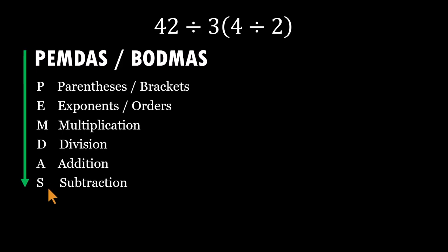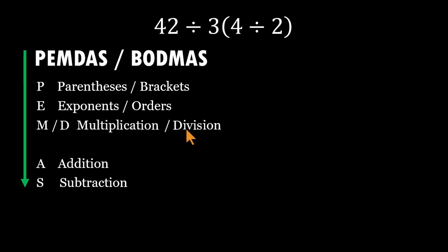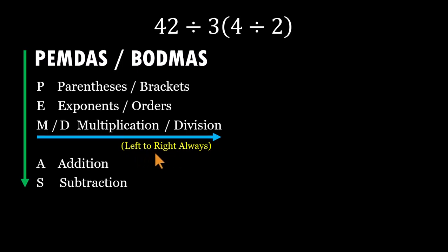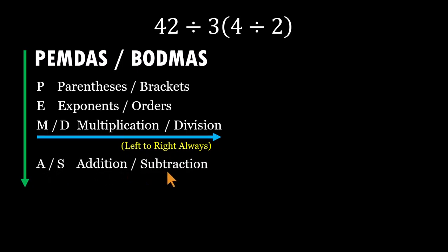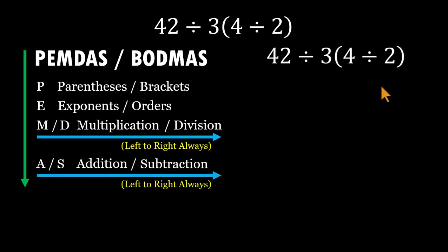But here's the crucial piece almost everyone forgets: multiplication and division are equals — same tier, same authority. And when two operations share the same level, we go strictly left to right. The same rule applies for addition and subtraction.